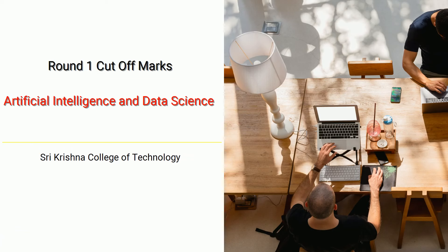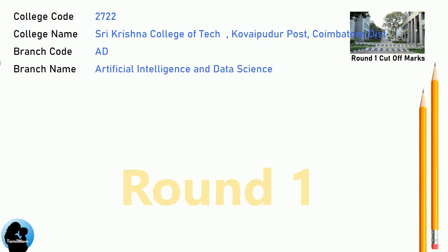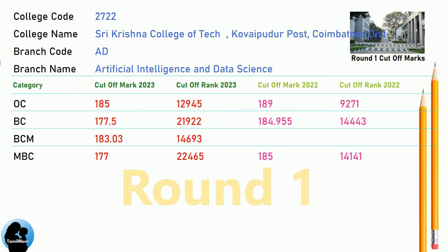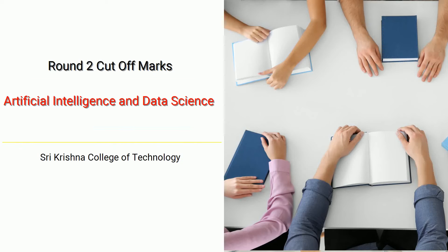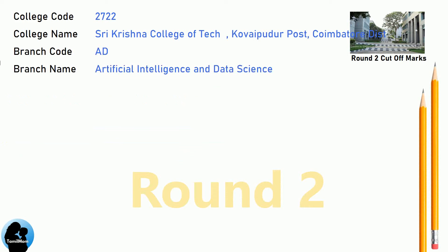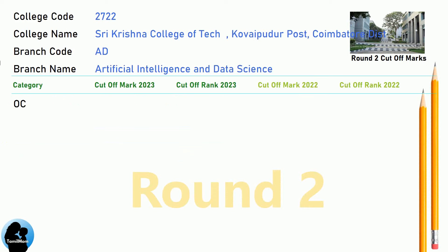DNA Round 1 Cut-off for Shri Krishna College of Technology in Artificial Intelligence and Data Science. DNA Round 2 Cut-off for Shri Krishna College of Technology in Artificial Intelligence and Data Science.